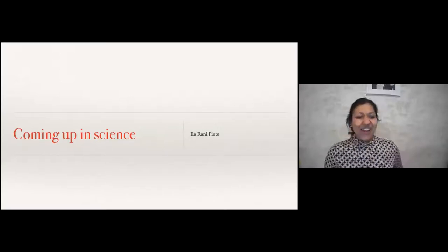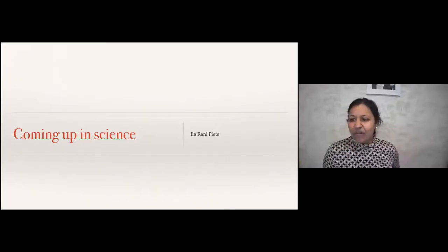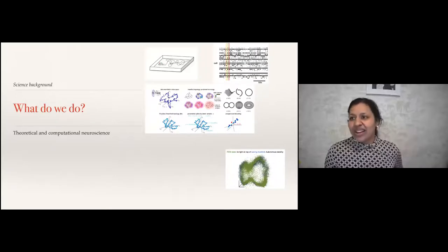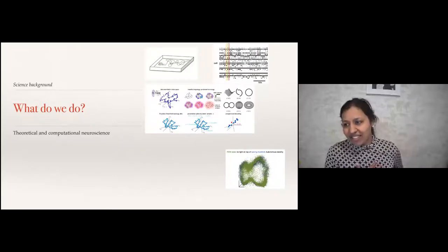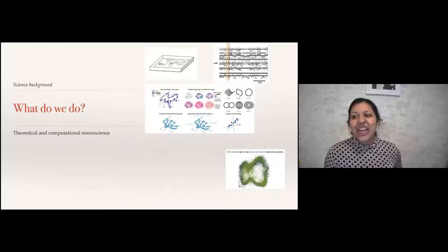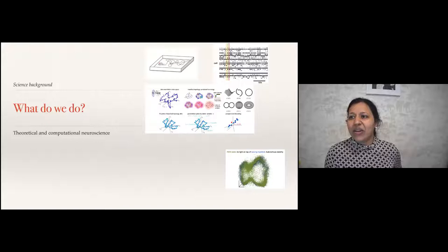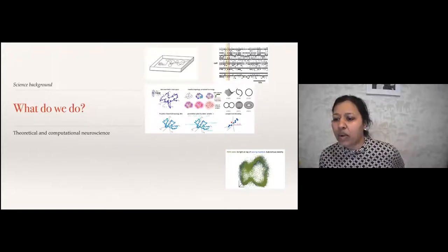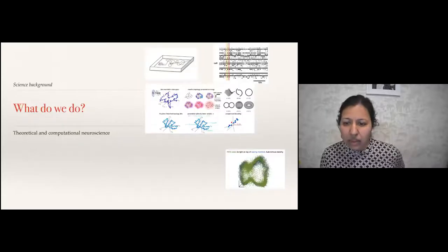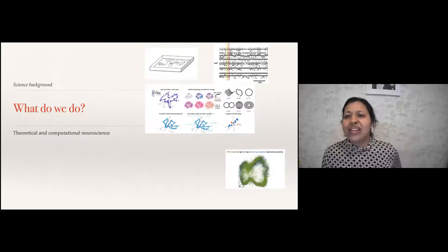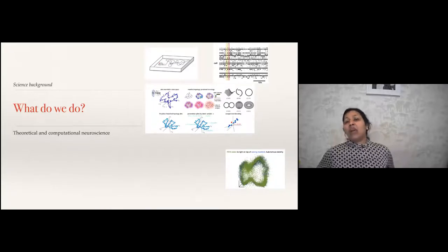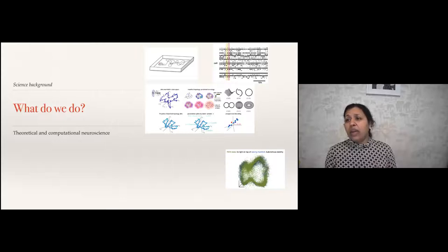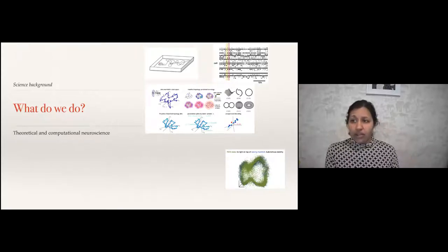So what is my story of coming up in science? First, a brief introduction to what we do in my group. I'm trained as a physicist but I work in computational and theoretical neuroscience now. One kind of thing we've been doing lately — my group tries to understand some of the neural substrates for memory and how the brain integrates various sources of information across different sensory modalities, and how it does that over time.